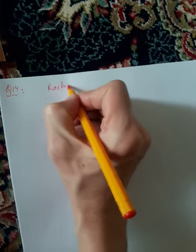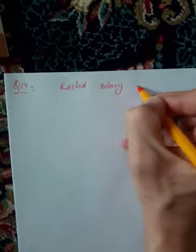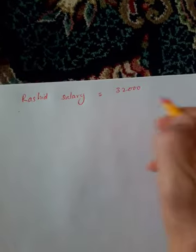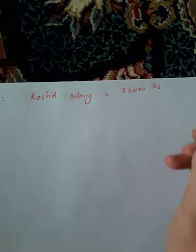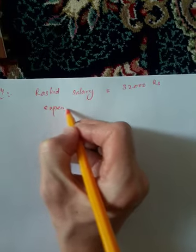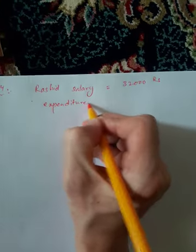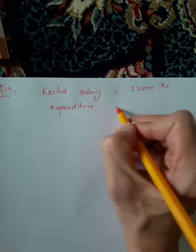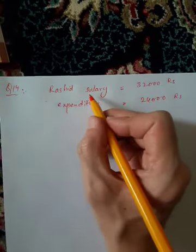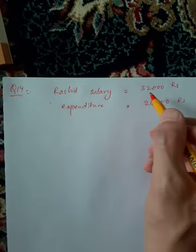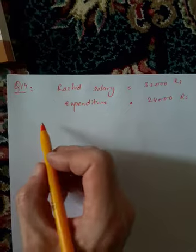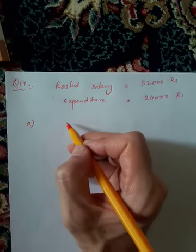Rasheed's salary is 32,000 and expenses are 24,000. Part a asks: What is his saving? Saving equals income minus expense.